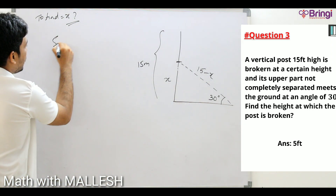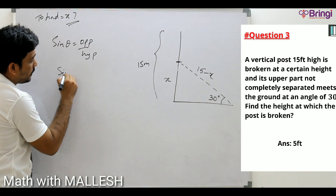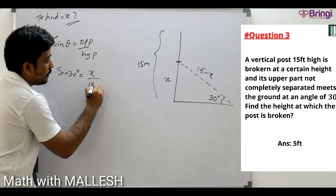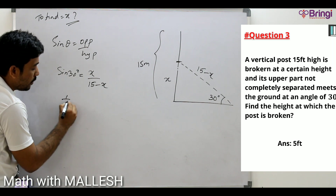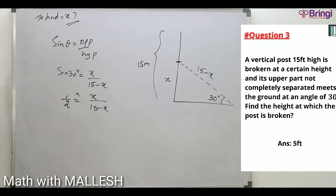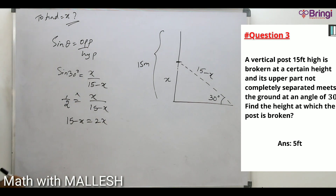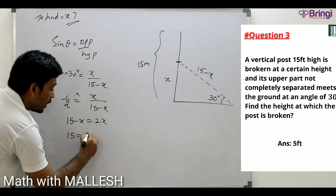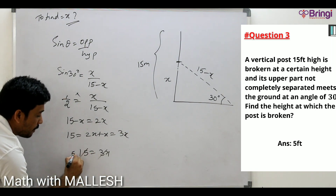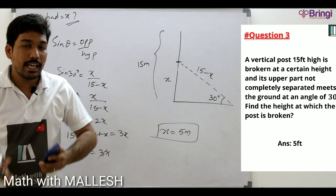Here we have 30°, opposite, and hypotenuse, so apply sin theta. sin theta = opposite/hypotenuse. sin 30° = x/(15 − x). Since sin 30° = 1/2, we get 1/2 = x/(15 − x). Cross-multiplying: 15 − x = 2x, so 15 = 3x, and x = 5 meters.